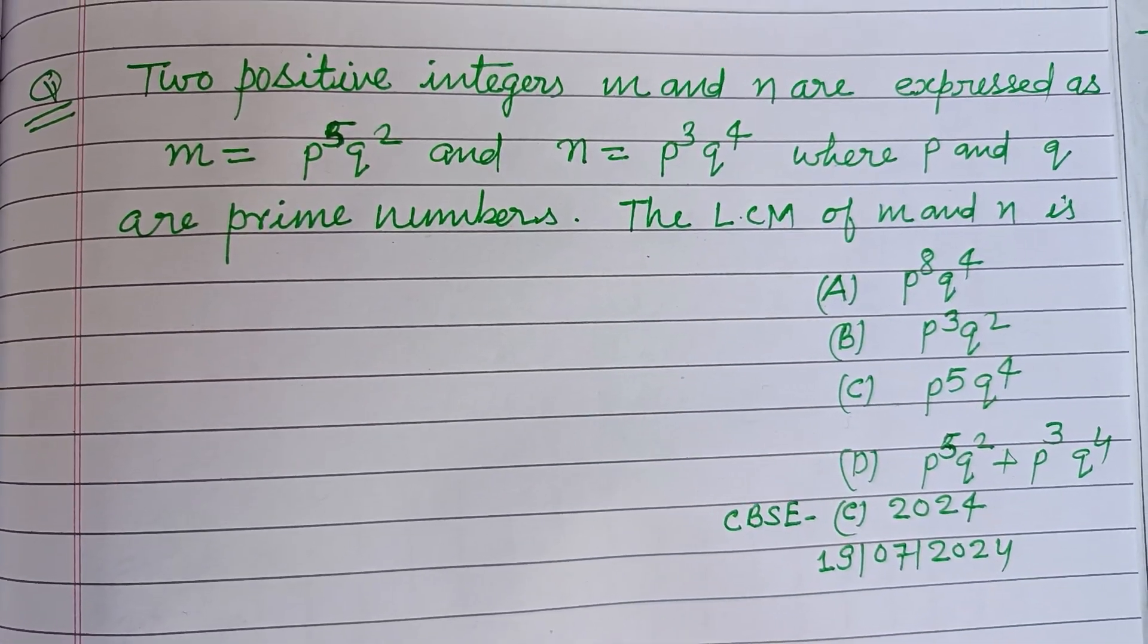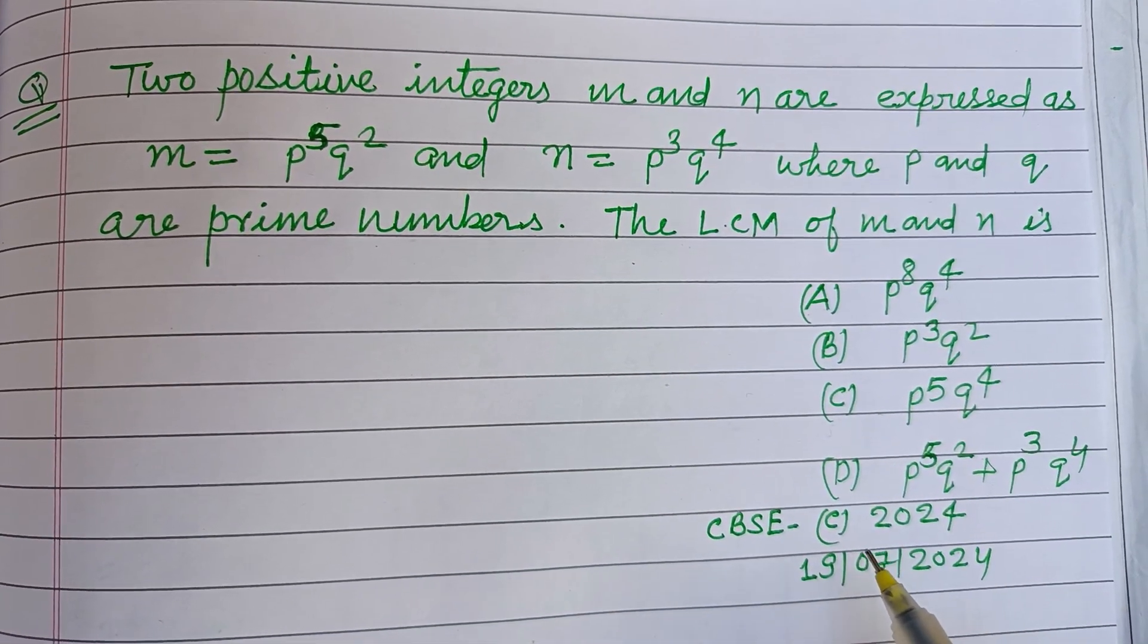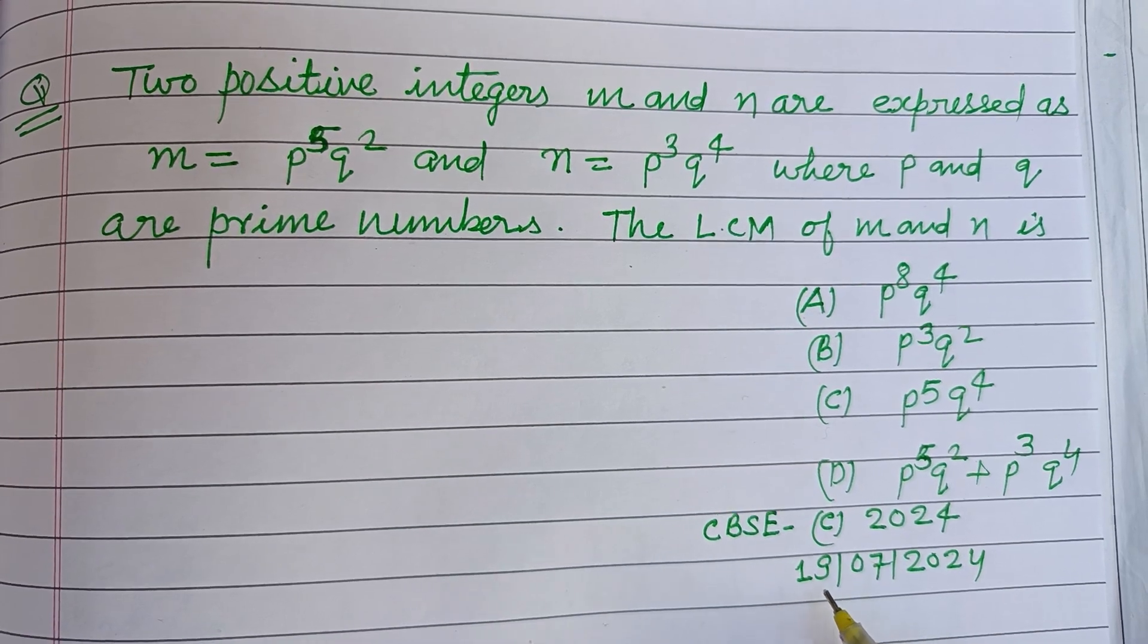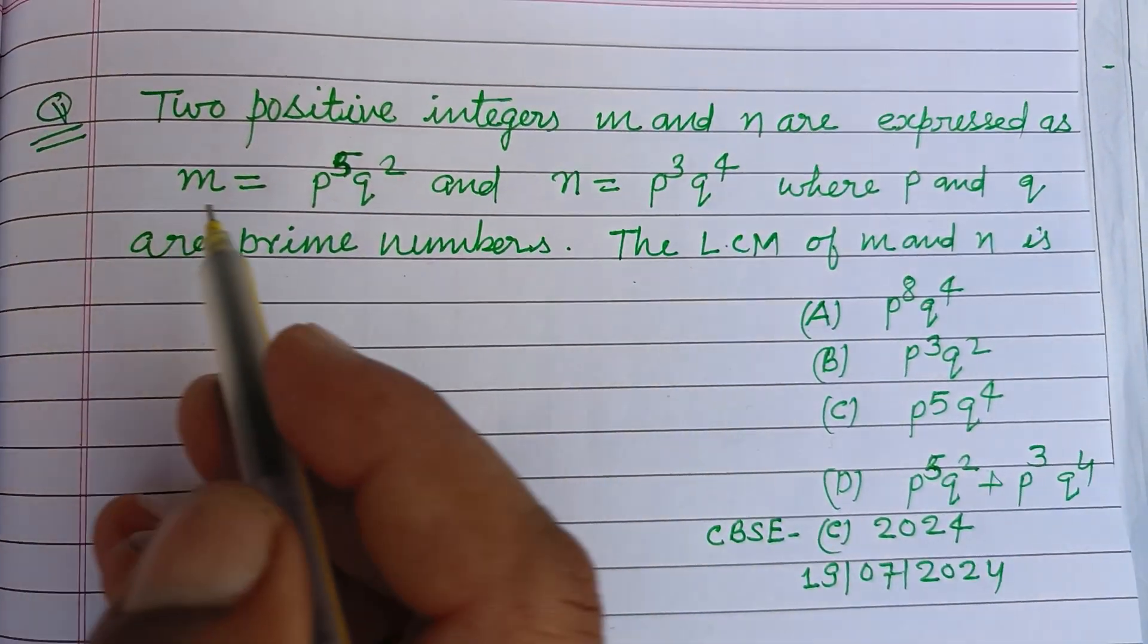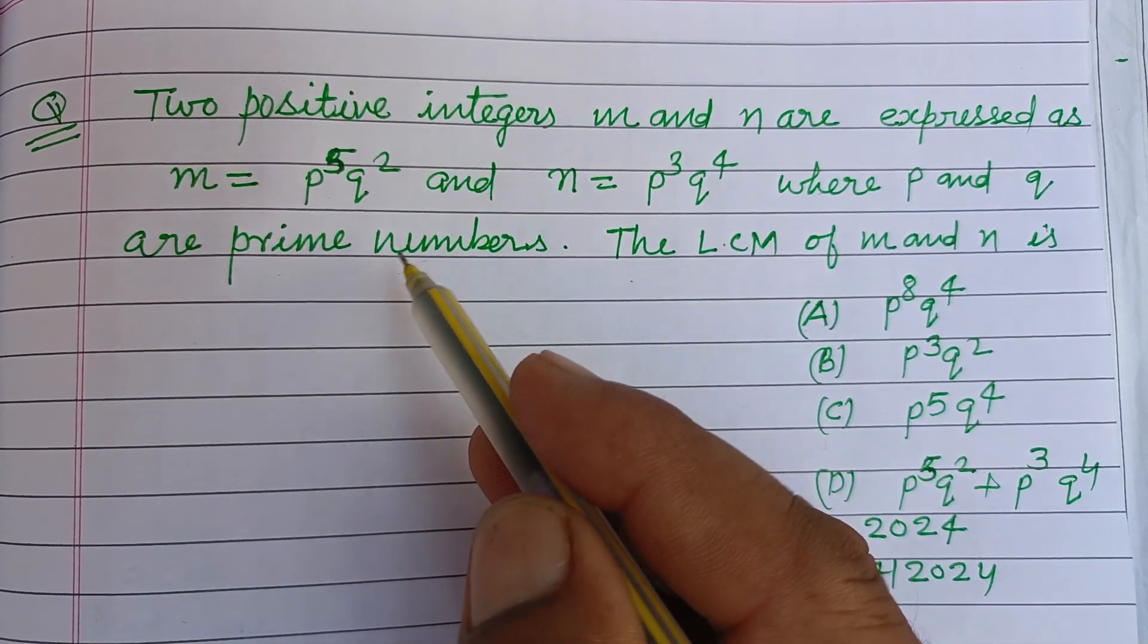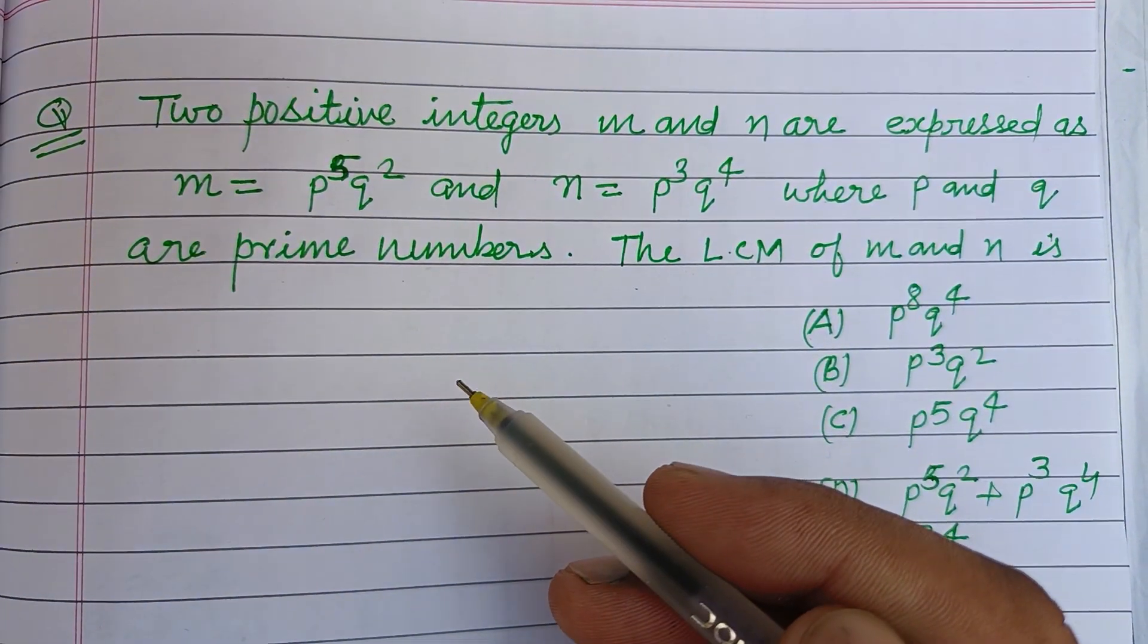Hello viewers, warm welcome to this YouTube channel. This is a question from CBSE Board Exam Compartment Exam 2024 held on 19 July 2024. Two positive integers m and n are expressed as m equal to p to the power 5 q square and n equal to p to the power 3 q to the power 4, where p and q are prime numbers.